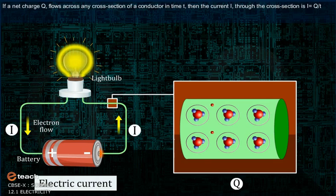If a net charge Q flows across any cross-section of a conductor in time T, then the current I through the cross-section is I equals Q upon T.